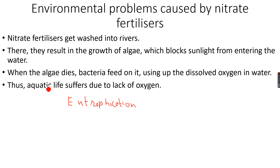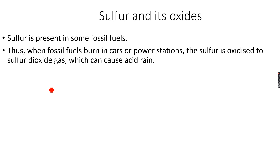Now, sulfur and its oxides: sulfur is present in some fossil fuels like petrol and certain types of coal. When these fossil fuels are burnt in cars and power stations, the sulfur inside them burns as well, forming sulfur dioxide. Sulfur dioxide causes acid rain.